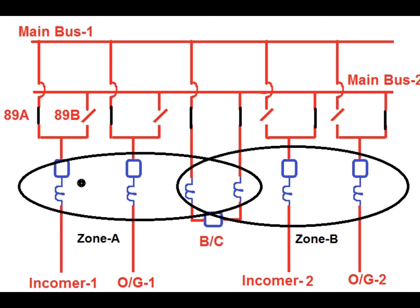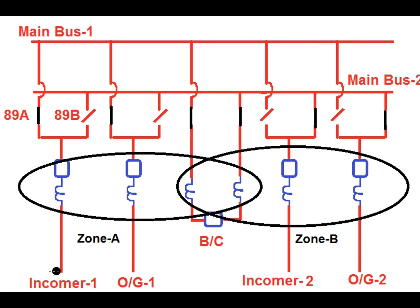How does the bus bar relay sense the fault at either zone A or zone B? The answer is by isolator selection. If the isolator is connected towards main bus 1, it will be counted as zone A. If the isolator is connected towards main bus 2, the current will be considered as zone B. The isolator has an auxiliary switch, and the auxiliary switch status is connected to the relay. If incomer 1 is connected towards main bus 1 via 89A, then the 89A status goes to the relay and incomer 1 is considered in zone A.